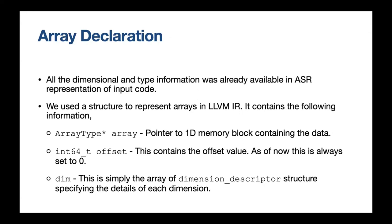For the LLVM backend, we used a structure to describe array descriptors. The first element is the array type pointer, named 'array', which is a pointer to a 1D memory block. All data is stored in 1D representation and we use CMO to convert IJK indices to a single index. Then comes the offset, which is a 64-bit integer — currently set to zero.